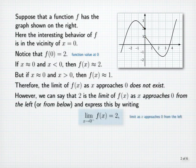Here, 2 is the limit of f of x as x approaches 0 from the left or from below. This means that for any interval centered at 2 on the y-axis, f of x will be in that interval whenever x is in a sufficiently small interval whose right endpoint is 0.